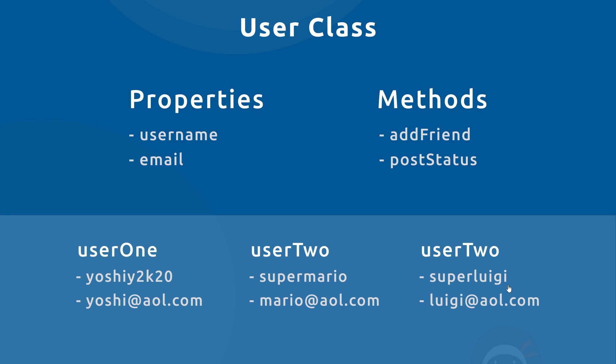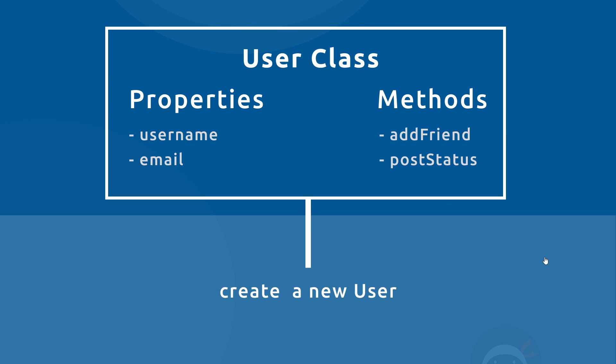All of these objects we create could all do the same things: add a new friend and post a status. So in programming, if we ever wanted to create a new user object, we'd create a User class, define the properties and methods that user object should have, and then tell PHP to make a new user object based on that class. That would create the new user object with those properties and methods. Now let's look at how we create a class in PHP and ask it to create an object based on that class.